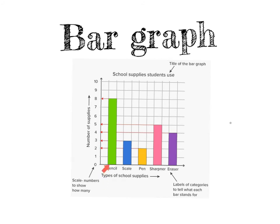Here is an example of a bar graph. We have pencil, scale, pen, sharpener, eraser — they have nothing to do with each other and therefore there are spaces in between. In the previous histogram the numbers were consecutive and therefore the bars touch, showing connection between one category and the next. But a pencil and a pen have nothing to do with each other, so there are spaces between sharpener and eraser as well, and the spaces are an indication of that.